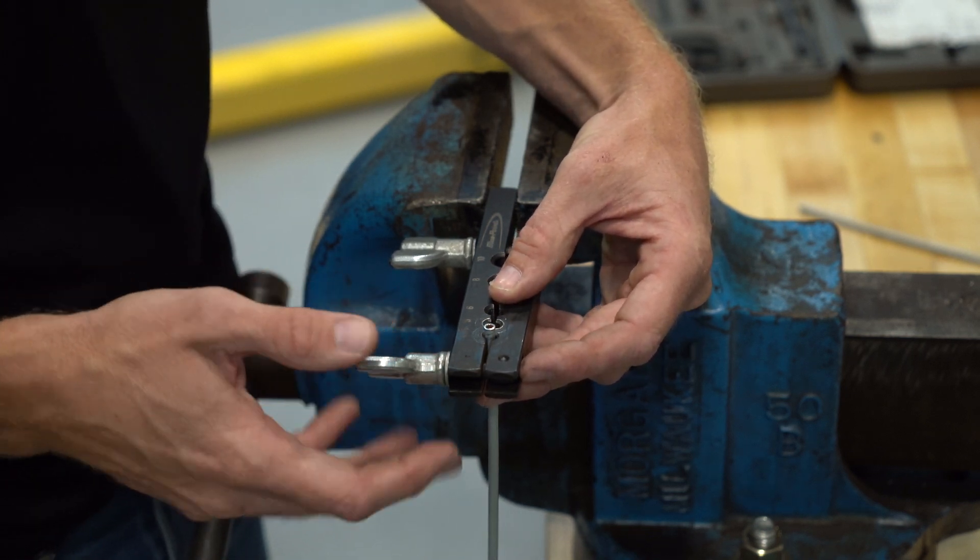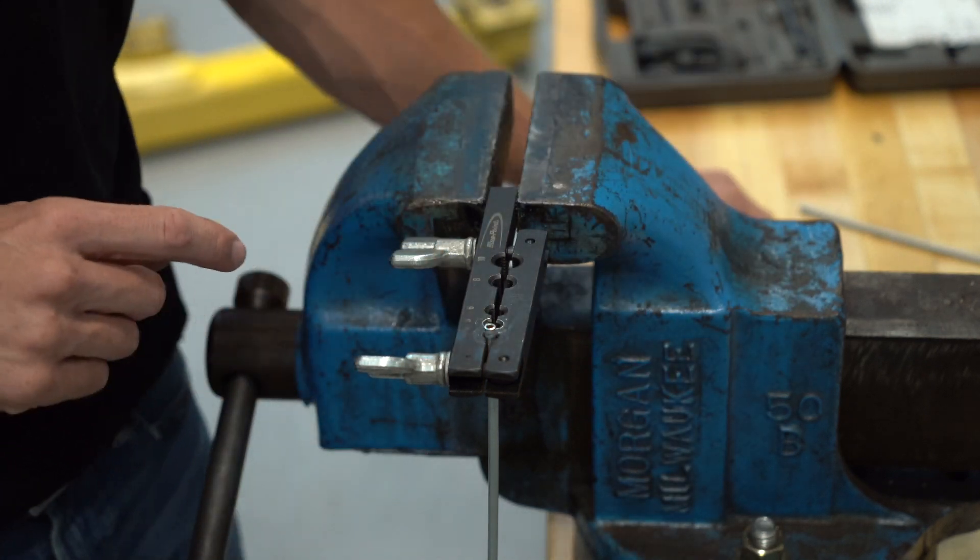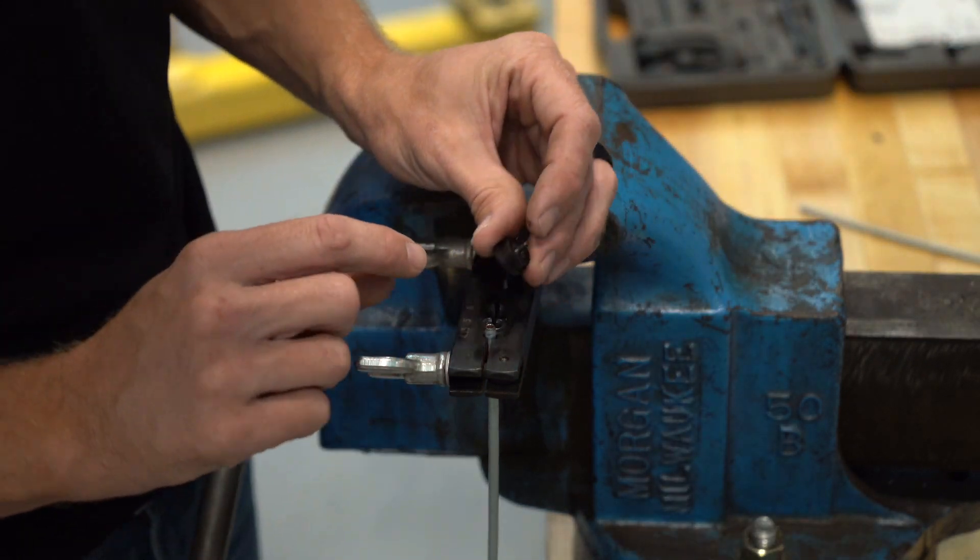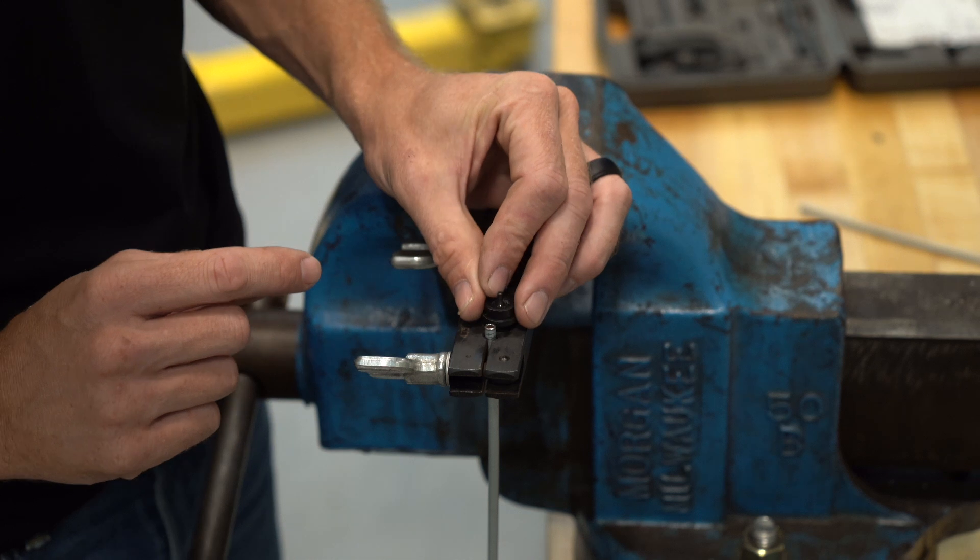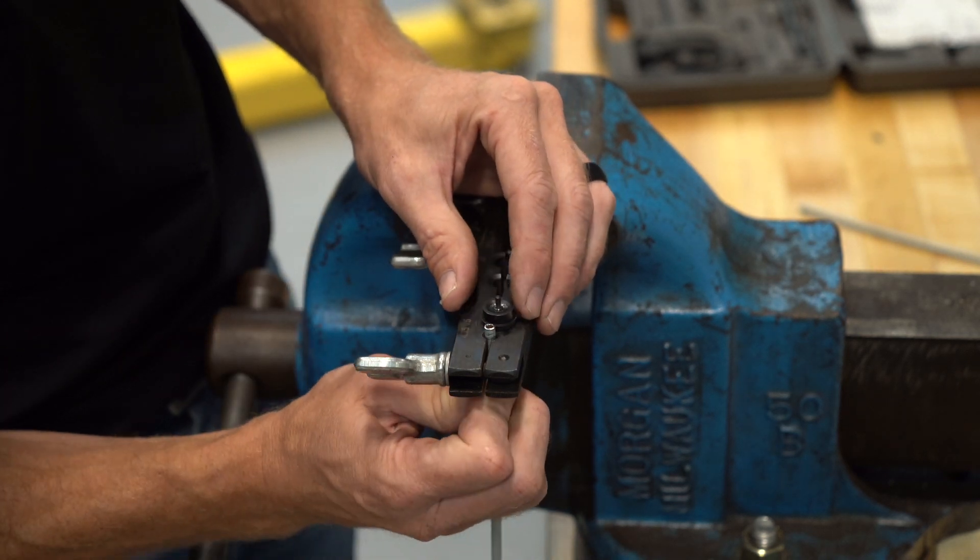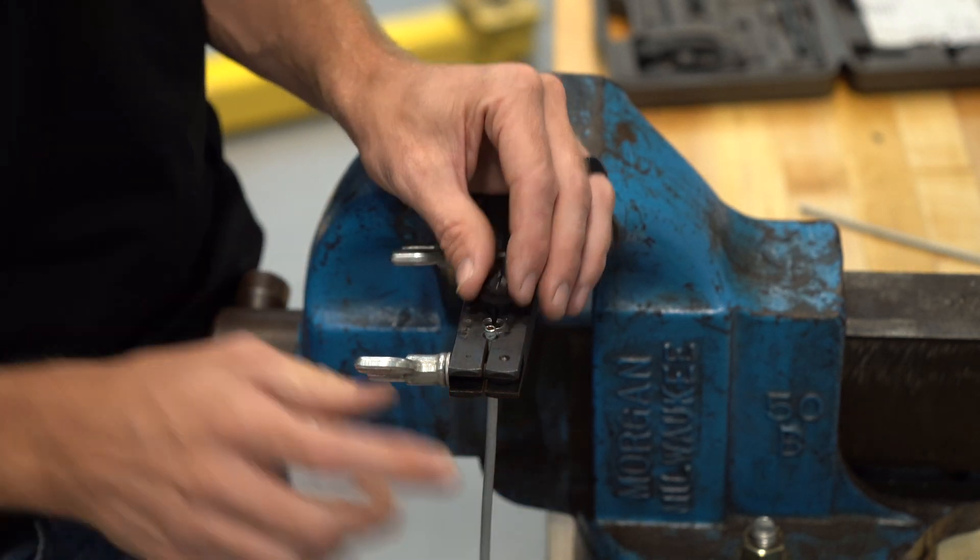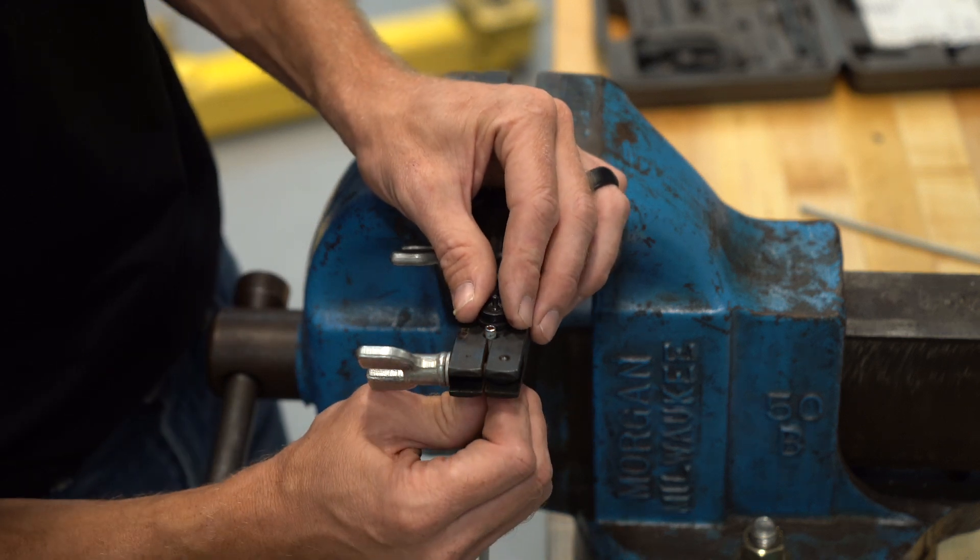The instructions say, on most of your double flaring kits, you're going to take the forming die and it has a shoulder on it. You're going to run the brake line up to that first shoulder. So that's how far it's going to protrude out of the tool.